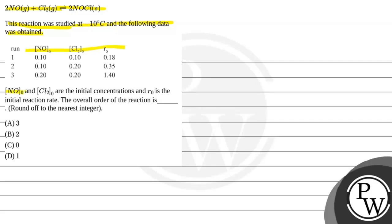This reaction was studied at minus 10 degrees Celsius and the following data was obtained. NO and Cl2 are the initial concentrations and R0 is the initial reaction rate. The overall order of the reaction is to be determined. The key concept of this question is the order of the reaction.